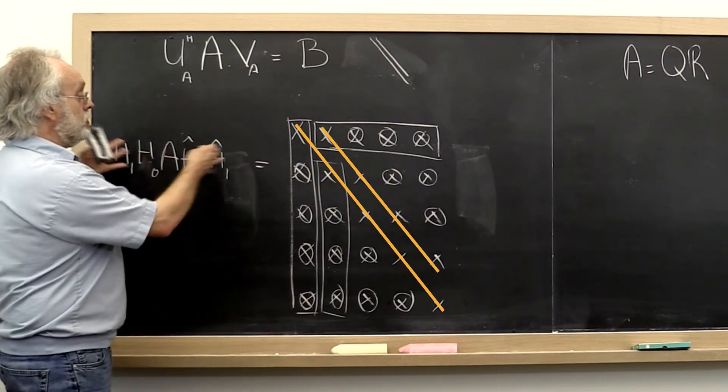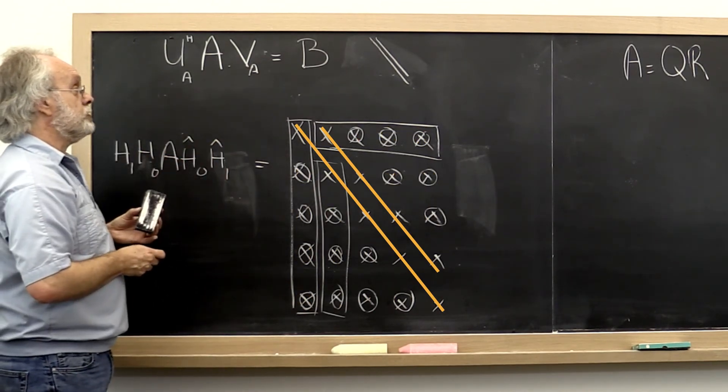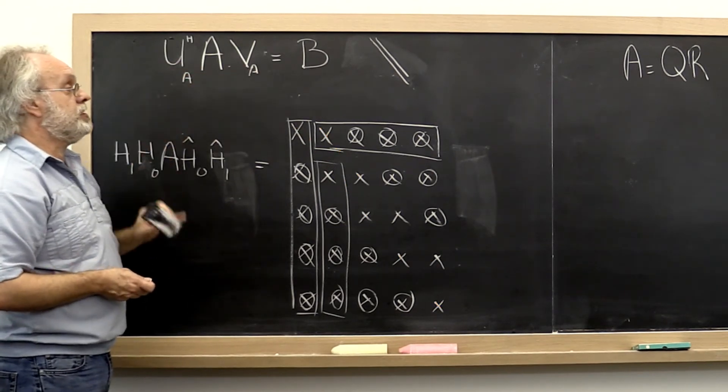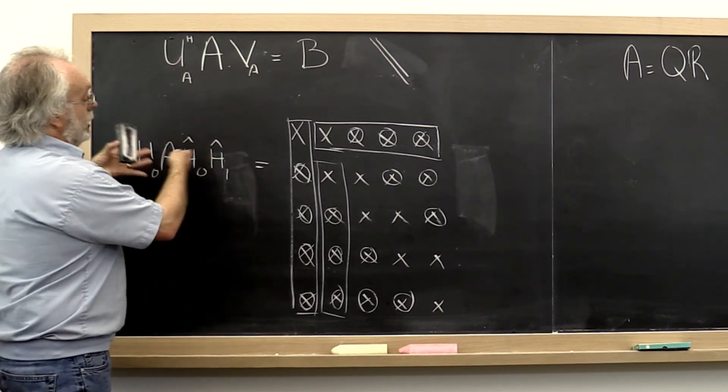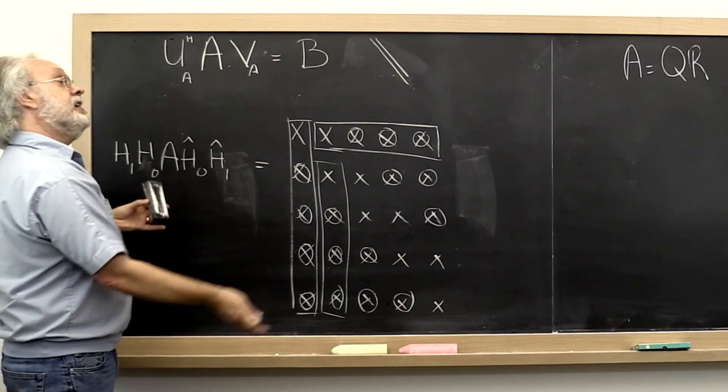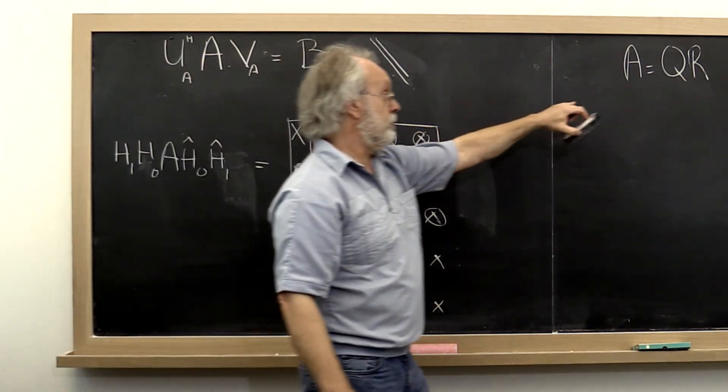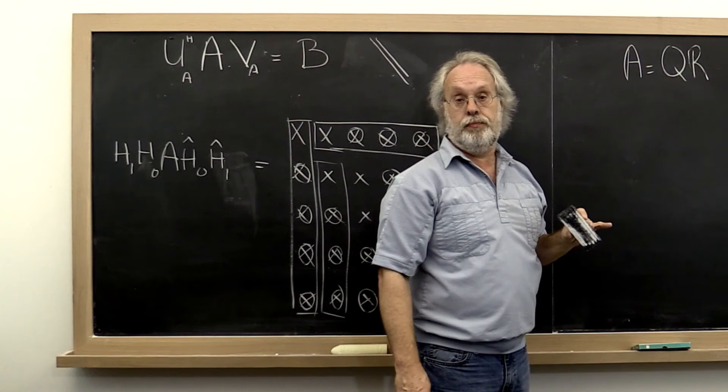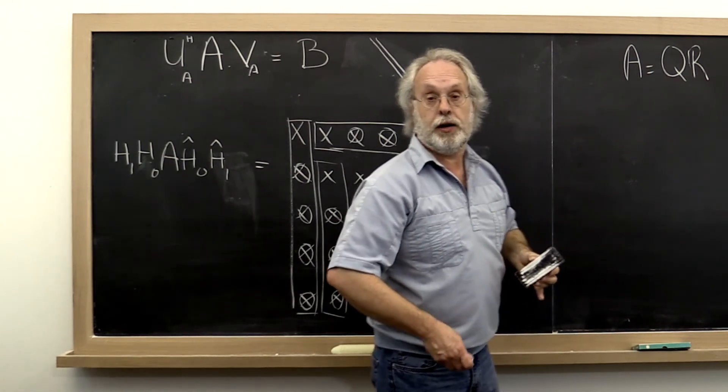And then obviously you can multiply all of these Householder transforms together to get these matrices. Or we can take all of these Householder transforms and apply them to the appropriate matrices. For example, our matrix Q. There are different ways of going about that.